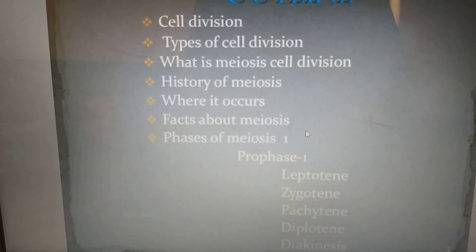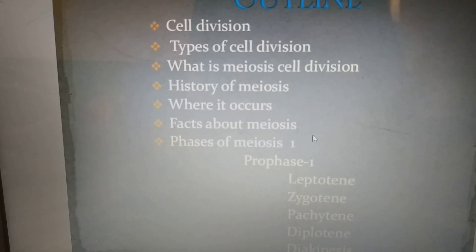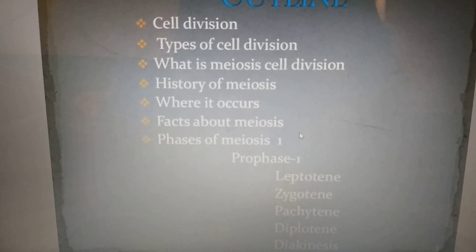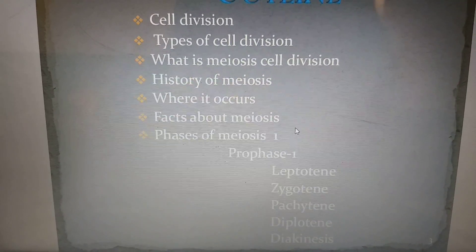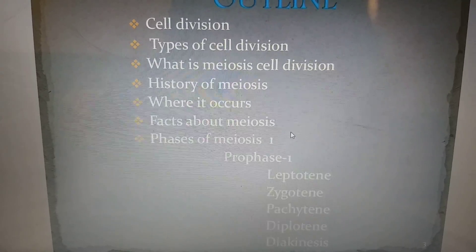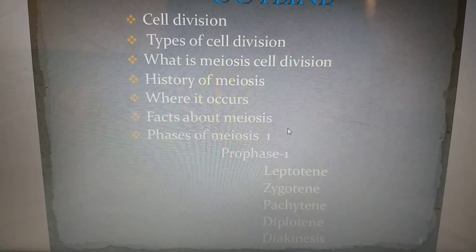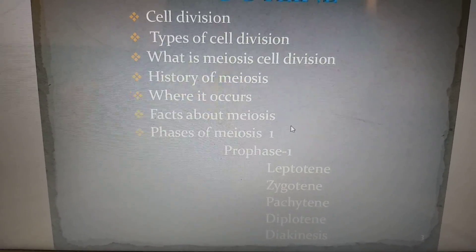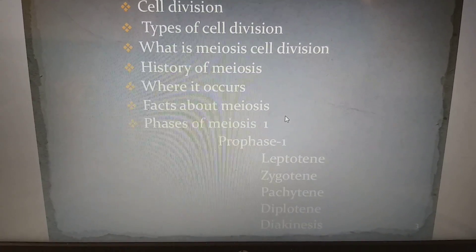Now we are going to see all about meiosis. The topics we are going to cover in this video are cell division, types of cell division, what is meiosis cell division, history of meiosis, where it occurs, facts about meiosis, and phases of meiosis.